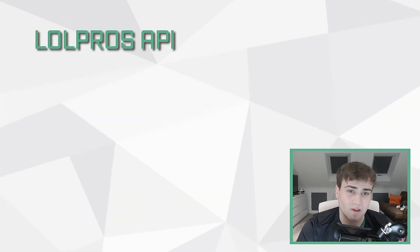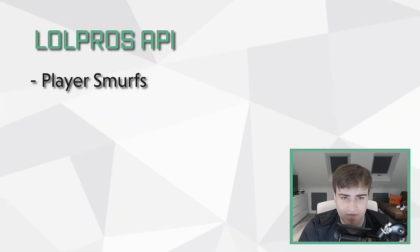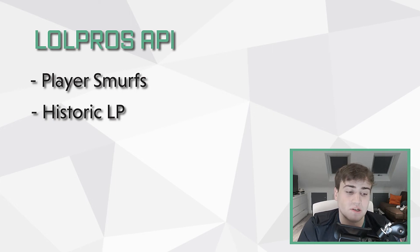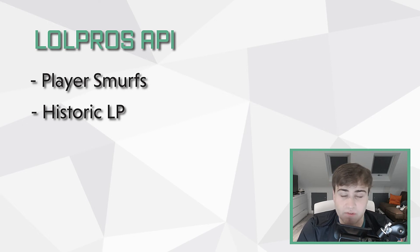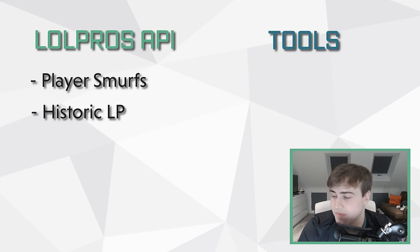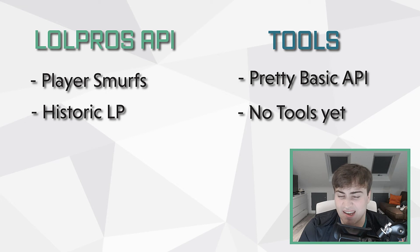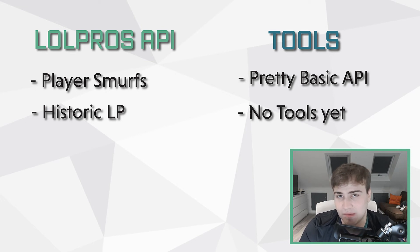The last one is the LoLPros API, where you can find player smurfs as well as historic LP, which might be something you're interested in if you're thinking about tracking your players' progress throughout the split. They have a pretty basic API with no tools written for it at the moment, although I'm thinking of doing one. It's a pretty simple API, and if you know how to write REST requests, you'll be totally fine using it from the ground up.